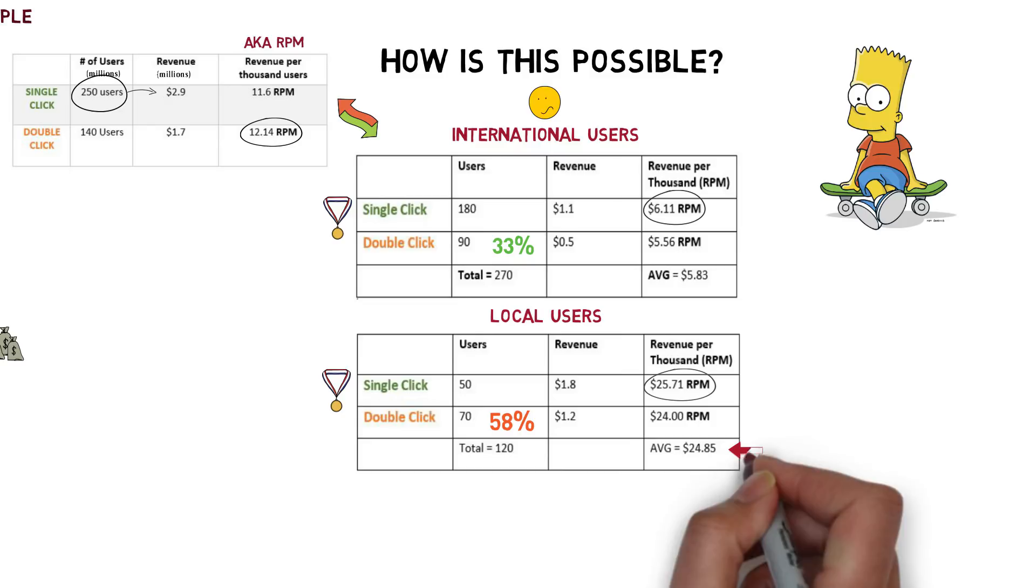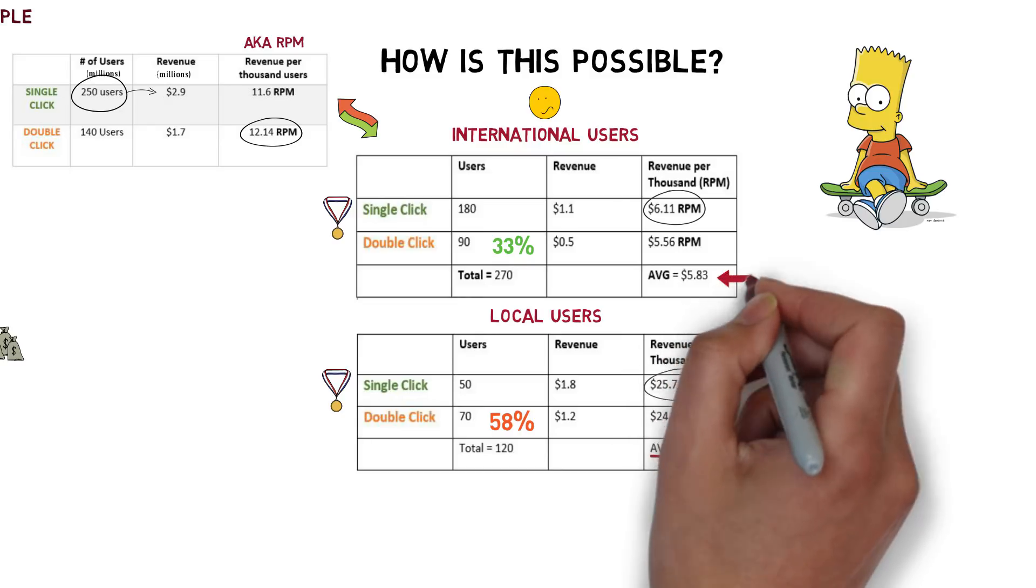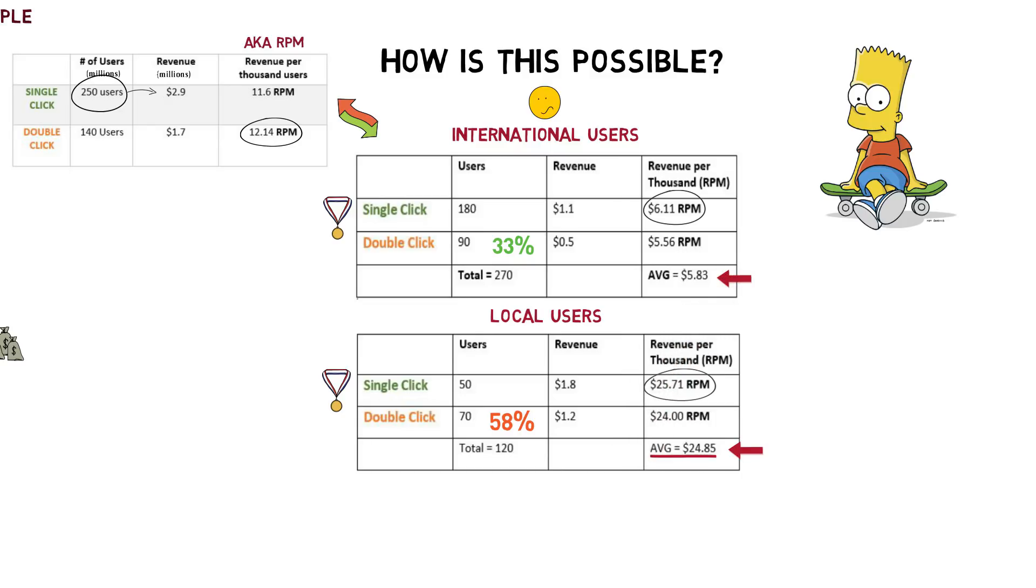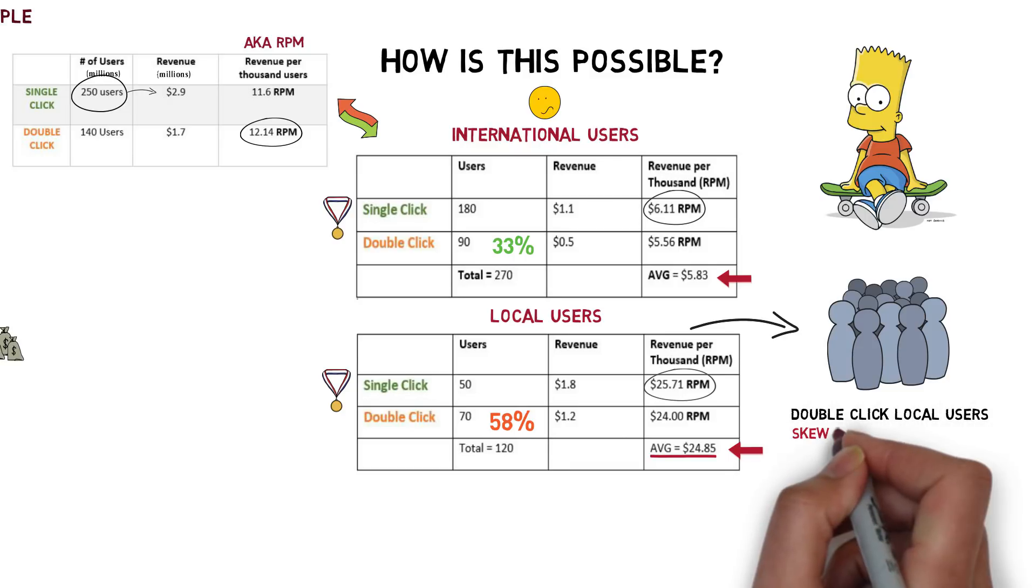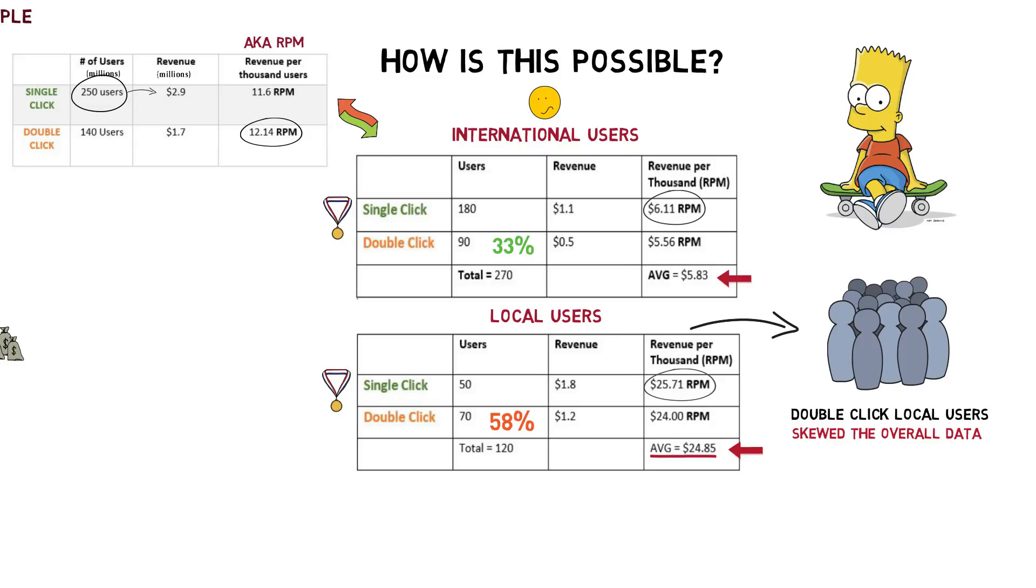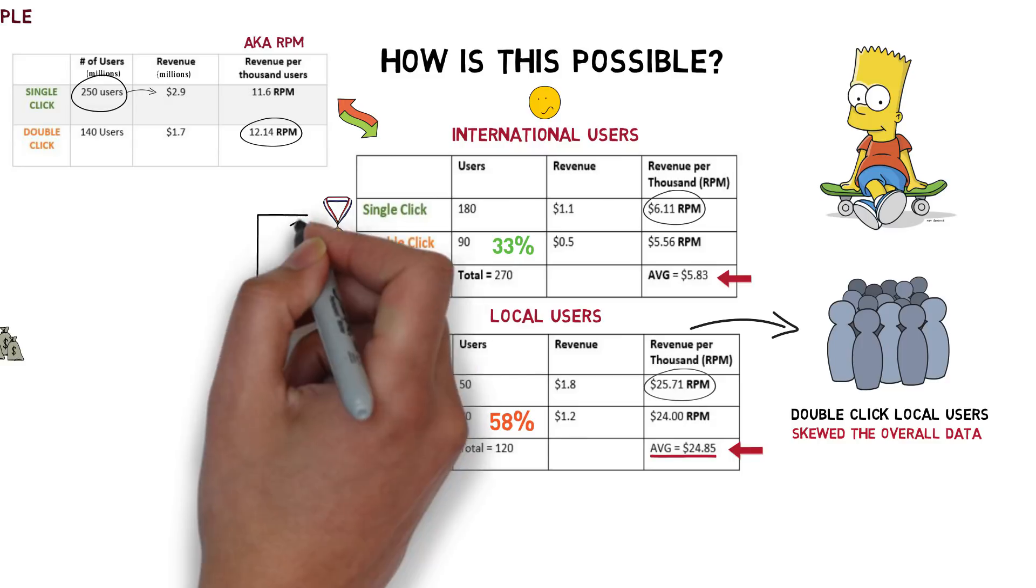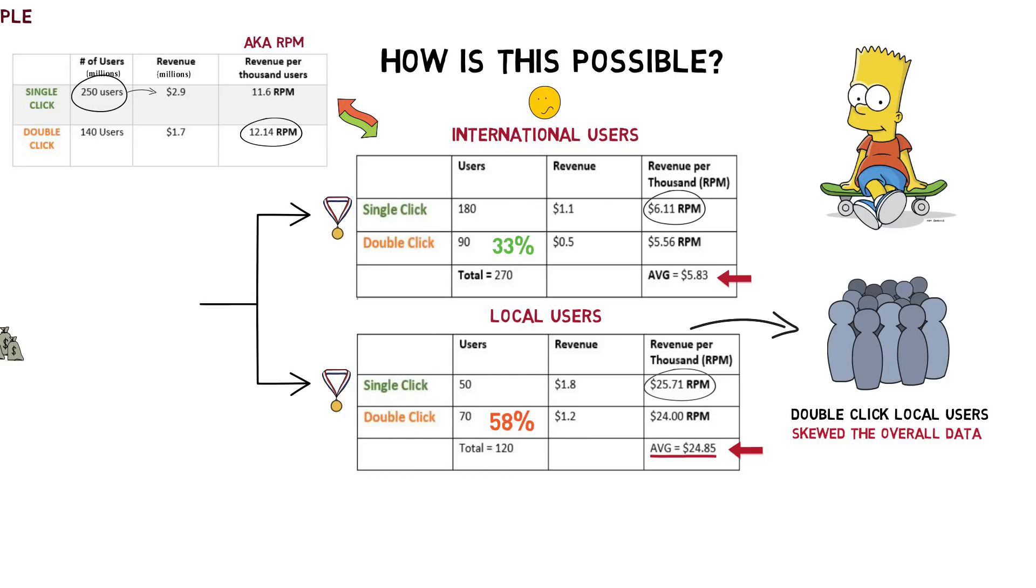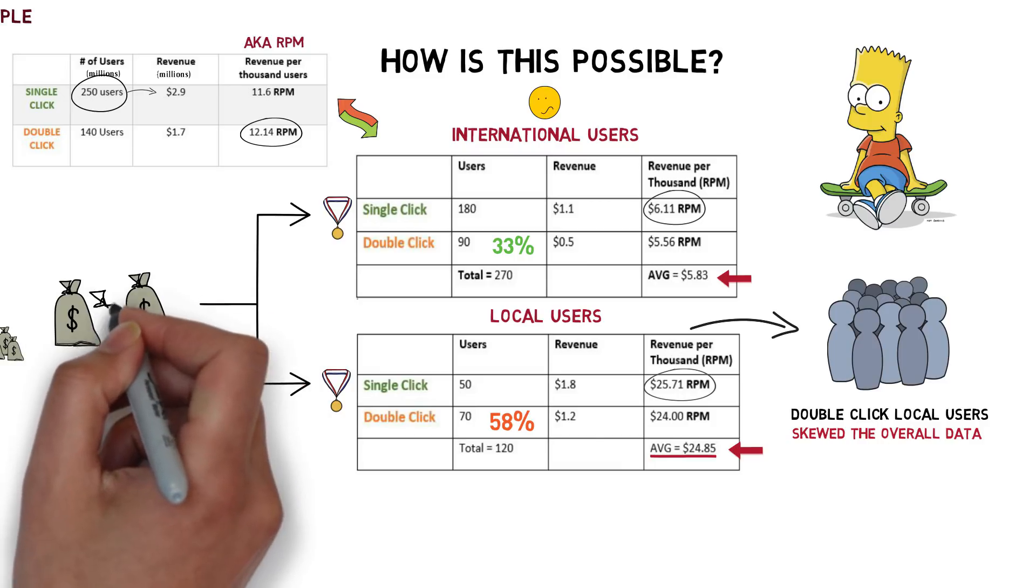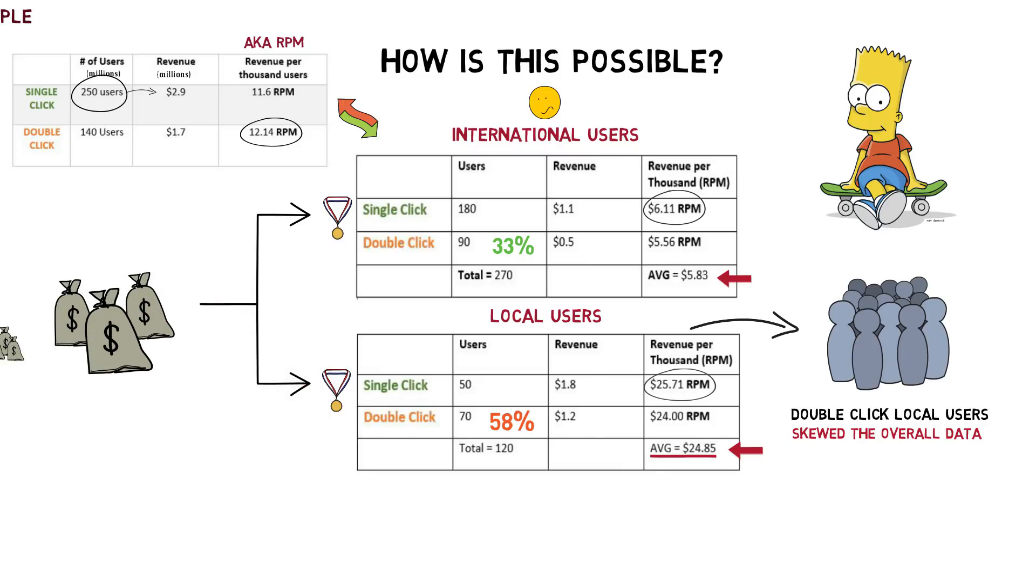The combination of the higher proportion and the higher RPM skewed the overall data. The reality was that single-click was generating more revenue per user than double-click. Phew, this was a tough example. Take a minute to pause the video and analyze the data if you need to.